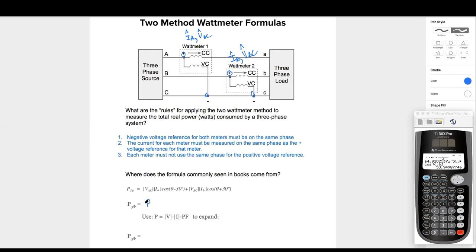So really this is just P wattmeter one plus P wattmeter two, right? P wattmeter one plus P wattmeter two. Now let's expand using the power formula, right? V times I normally gives us volt amps, but if we multiply volt amps by power factor, we get watts.